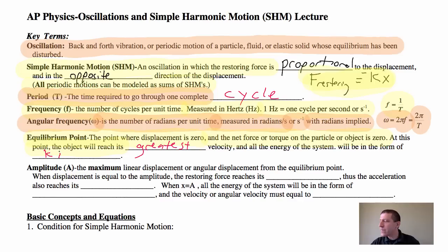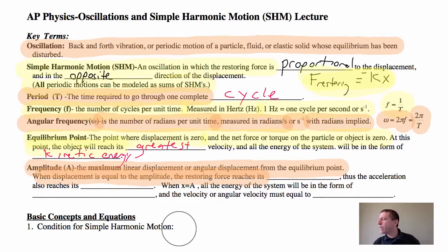The amplitude - amplitude A - is the maximum linear displacement or angular displacement from the equilibrium point. It's when it's at its extreme, that value, that displacement is the amplitude. Now, when the displacement is equal to the amplitude, restoring force will equal its maximum value. Thus, the acceleration also reaches its maximum. When the displacement X is equal to A, all the energy of the system will be in the form of blank.